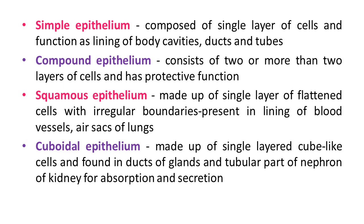Cuboidal epithelium is made up of a single layer of cube-like cells. It is found in the ducts of glands and tubular parts of the nephron of the kidney, and its function is absorption and secretion. Comparing squamous and cuboidal epithelium: squamous cells are near to square shape while cuboidal cells are cube-shaped, and they are present at different locations in the body.